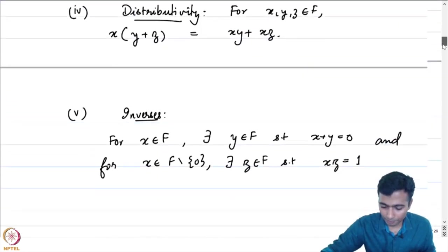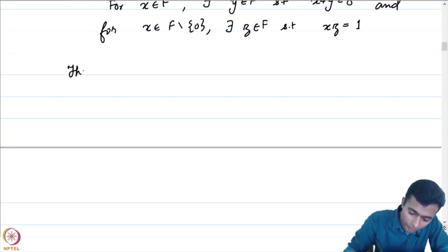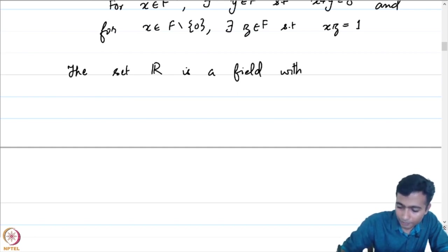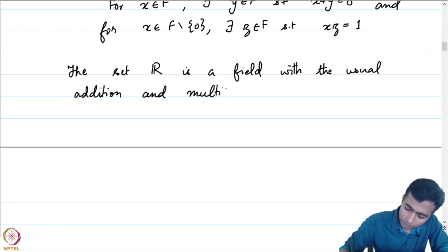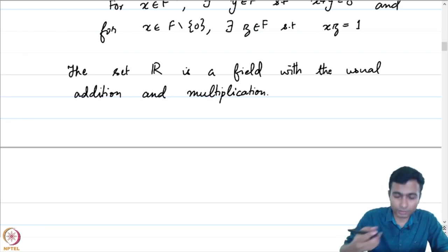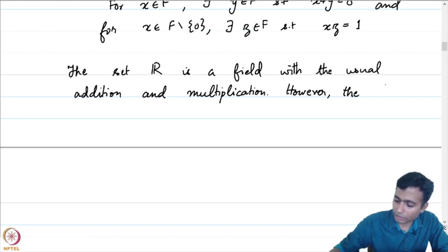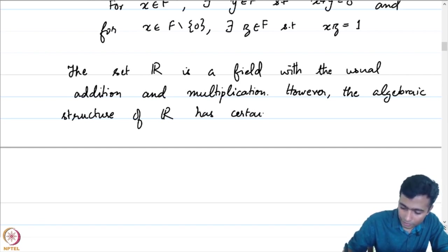This is the set of all properties which need to be satisfied by the two operations for a given set to be a field. That is the definition of a field. We are familiar with the field of real numbers. The set R is a field with the usual addition and multiplication operations.